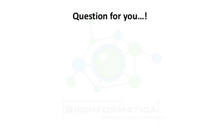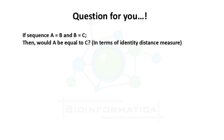Now that we are aware of the terms sequence similarity and identity, here is a question for you. Given three sequences A, B, and C, if A equals B and B equals C, would A be equal to C? Pause the video, think about the question, and if you get the correct answer, tell us in the comment section below.